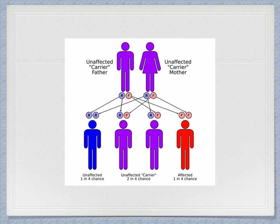For example, if you have a look at this couple here — they are both carriers, for example, carriers for cystic fibrosis. What is the probability that they're going to have a child who will have cystic fibrosis? It's going to be a one in four chance.